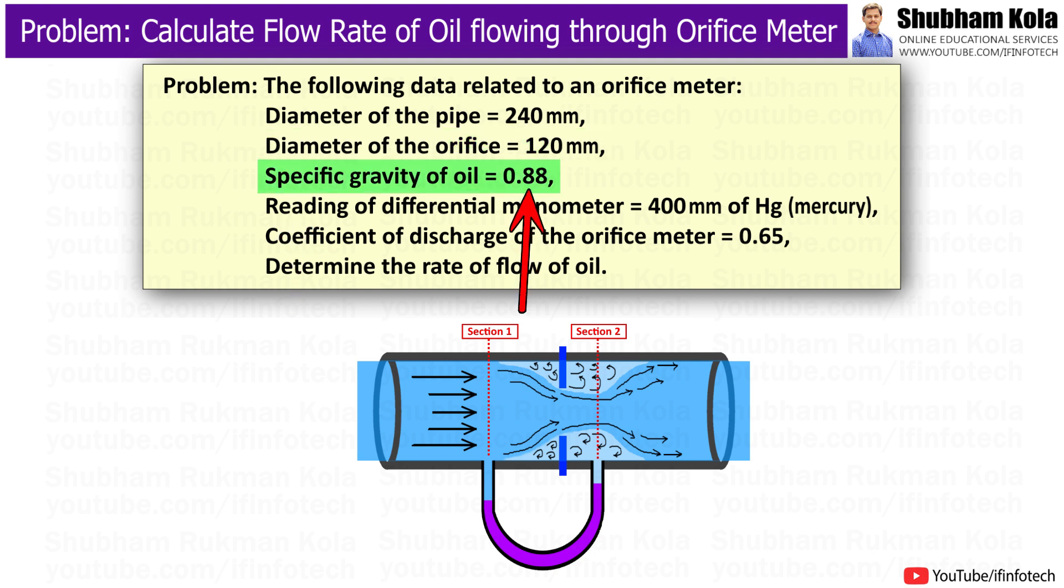Specific gravity of oil is equal to 0.88, reading of differential manometer is equal to 400 mm of Hg (mercury), the coefficient of discharge of the orifice meter is equal to 0.65. Determine the rate of flow of oil.